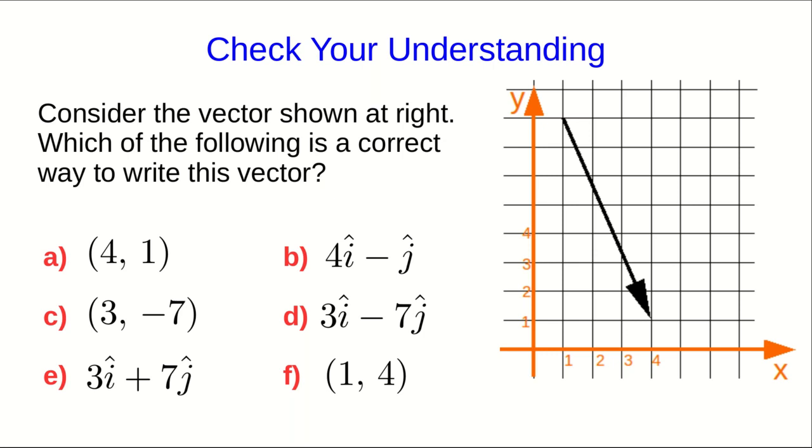Let's check your understanding of this. Here is a vector on a grid and I want you to choose which of these is a correct way of writing down this vector. As usual if you're doing this through Moodle, Moodle will ask you this question before taking you to the next video. If you're not doing it in Moodle then you should still try and answer it before you move on to the next part.